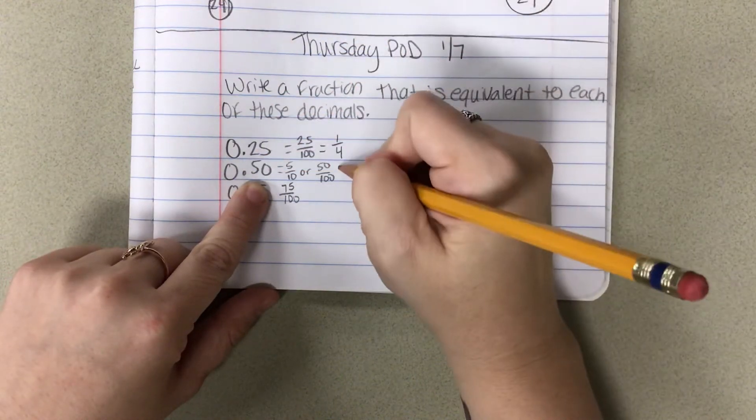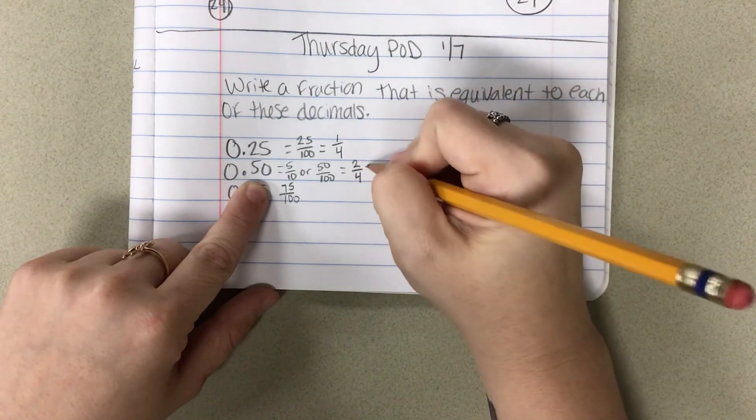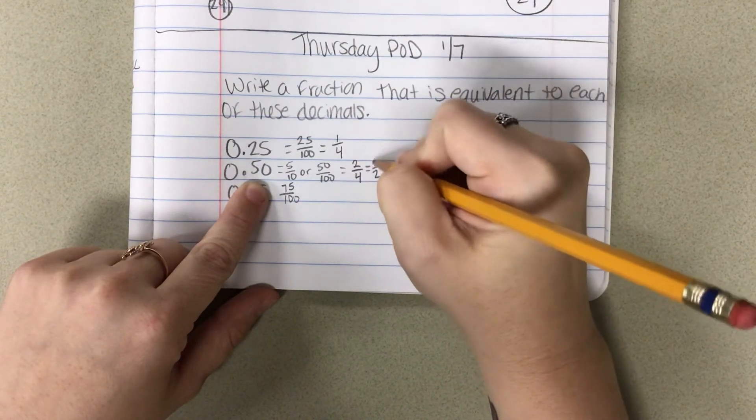50 cents. That would be 2 quarters out of 4 quarters. Well, what is 2 fourths? That's the same as 1 half, or half a dollar.